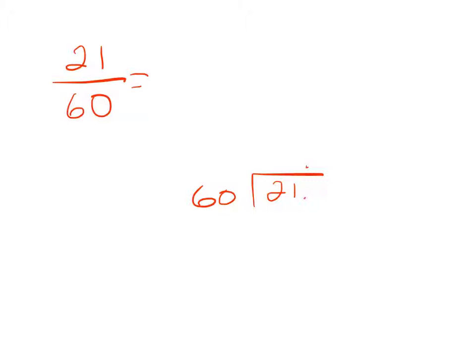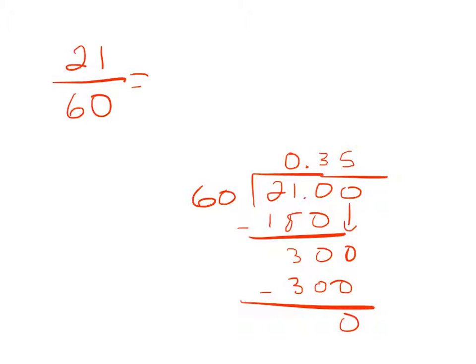So in that case, we would do 21 divided by 60. Put a decimal here. 60 wouldn't go into 21, but it would go here three times. And that will be 180. Subtract that. That will be 30. Add another zero here. 60 will go into there five times. So we would say 0.35.